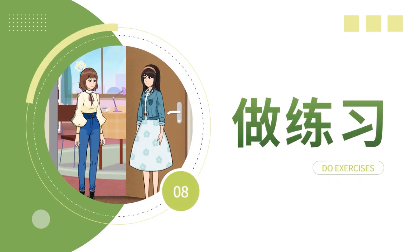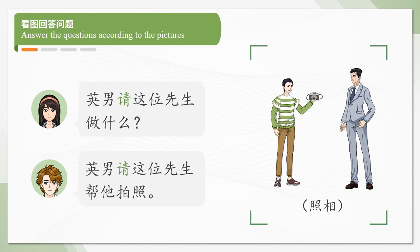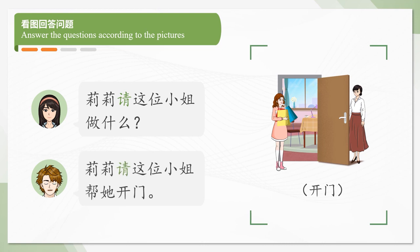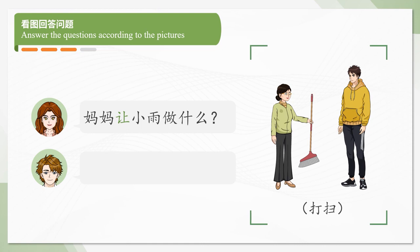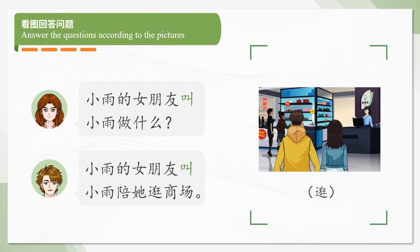Now, let's do some exercises. Answer the questions according to the pictures. 英南请这位先生做什么？英南请这位先生帮她拍照。厉丽请这位小姐帮她开门。妈妈让小雨做什么？妈妈让小雨打扫房间。小宇的女朋友叫小宇做什么？小宇的女朋友叫小宇陪她逛商场。